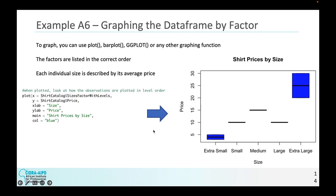So graphing that data frame. Example A6. So to graph it, you can use plot, bar plot, ggplot, or any other graphing function. And the factors are listed in the correct order that we had specified earlier by the levels, which is why I think they are very useful for ordinal data to actually graph it quickly without having to do any workarounds.